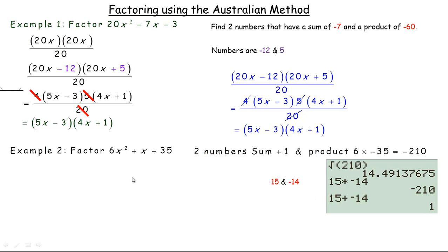So we write down, in this case the A value is 6, we go 6x times 6x over 6. And then we want to stick the 15 and the negative 14 in here. So there's the 15 and negative 14. And we can common factor a 3 out of here and a 2 out of here. And so it would look like that, the 3 comes out of here.